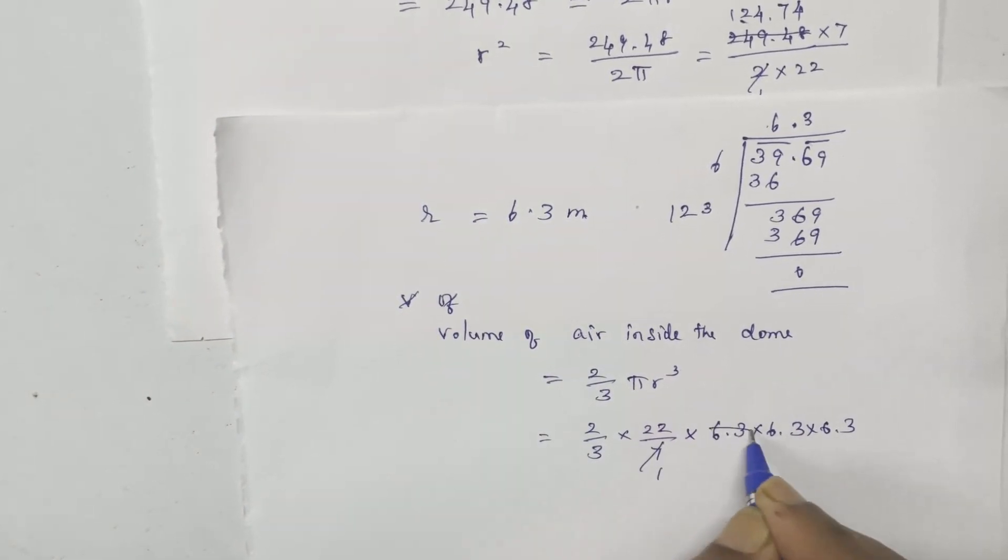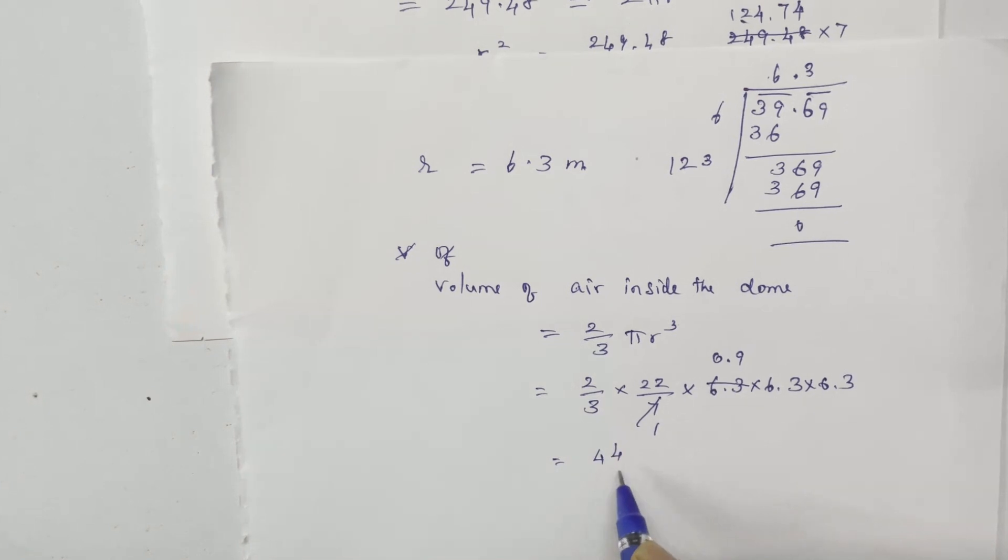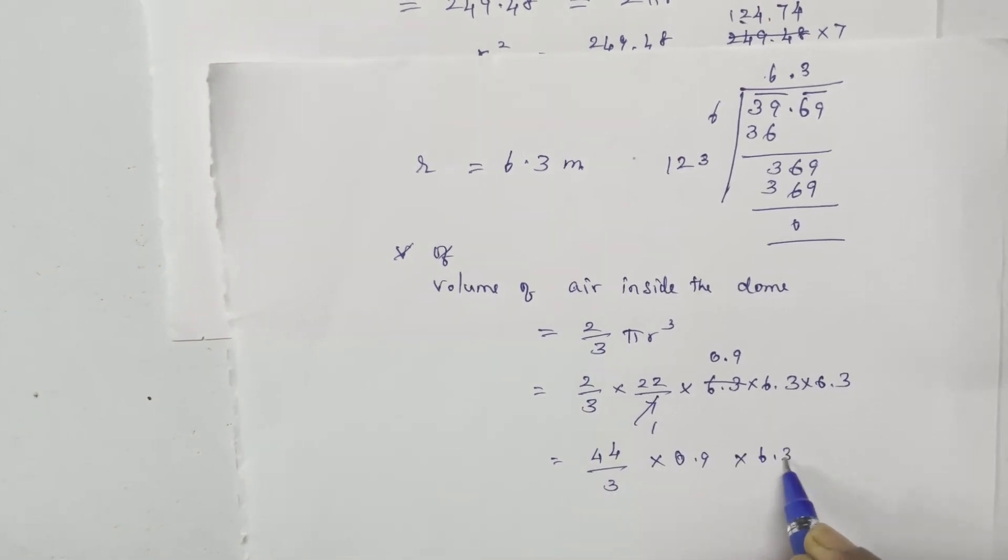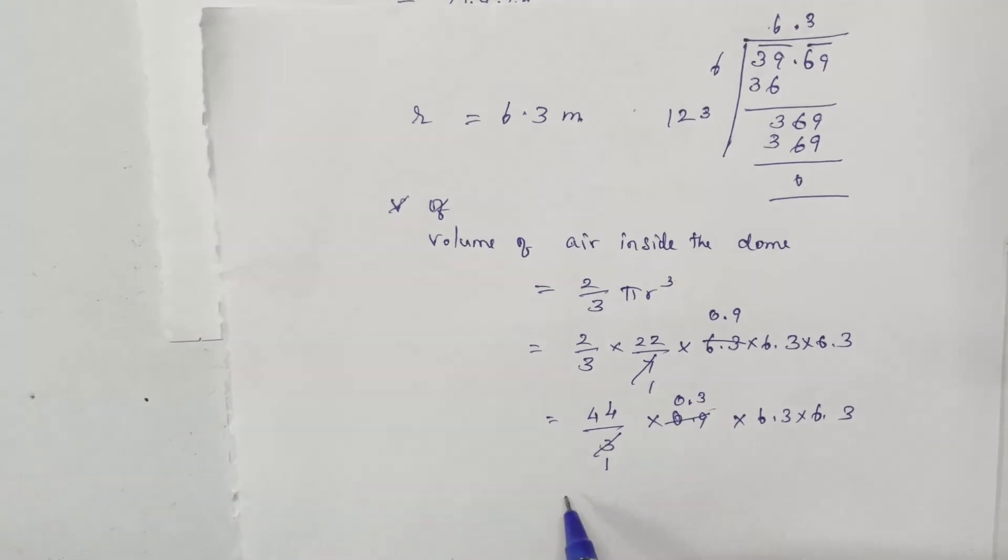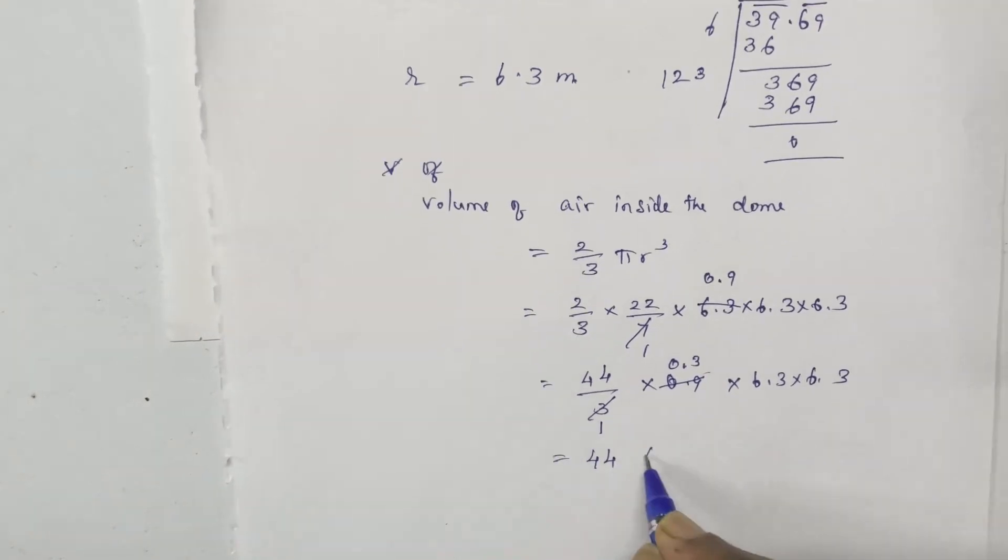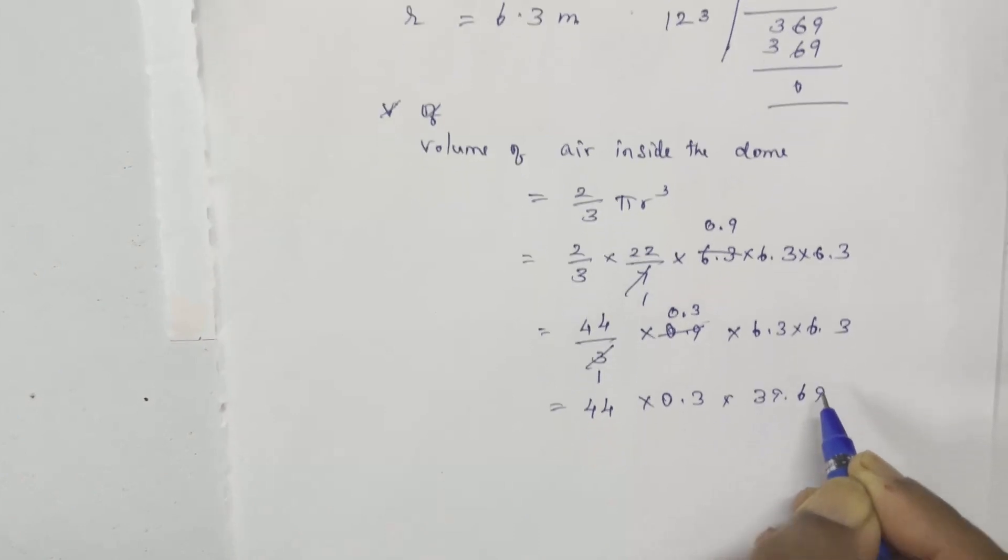Substituting: 2 by 3 times 22 by 7 times 6.3 cubed. Canceling out terms: 44 times 0.3 times 39.69, which equals the volume.